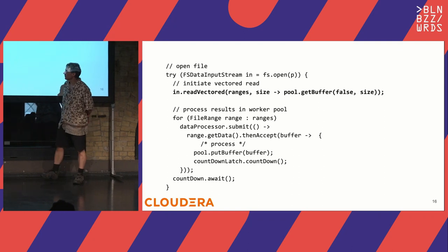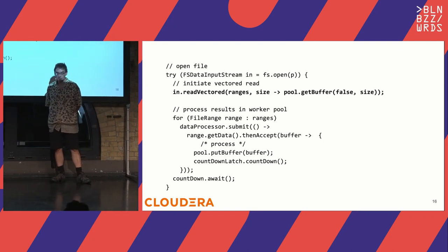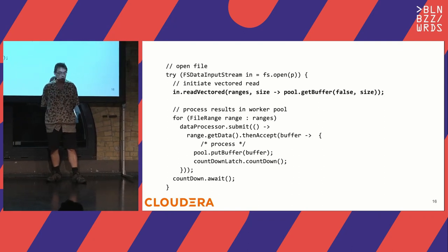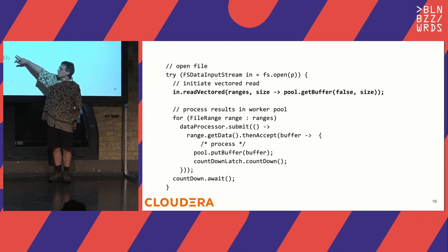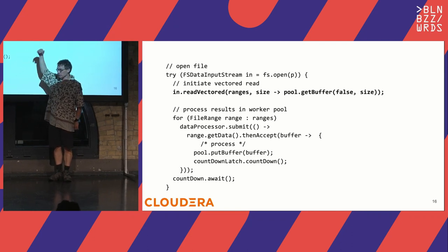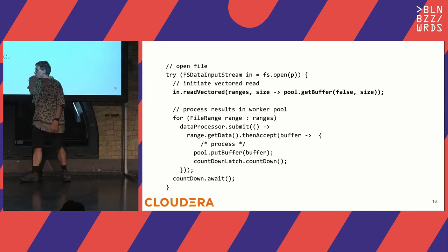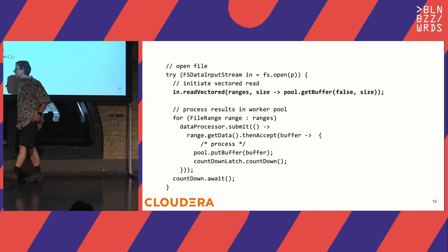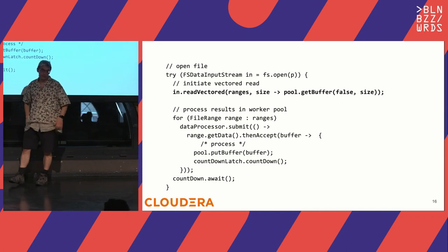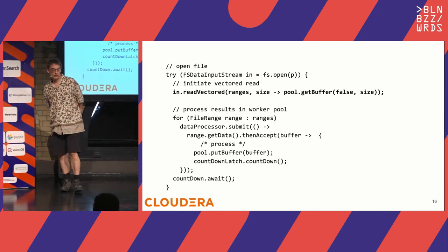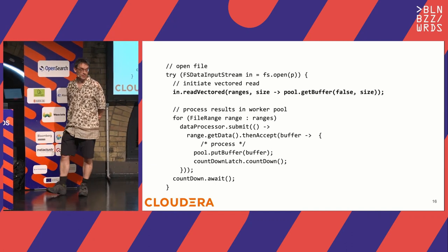If using the default implementation, you'll only get one response at a time — once it's finished it does the next one — but you can still process it asynchronously. When running in parallel on connectors that support parallel I/O, your thread pool will be kept busy.